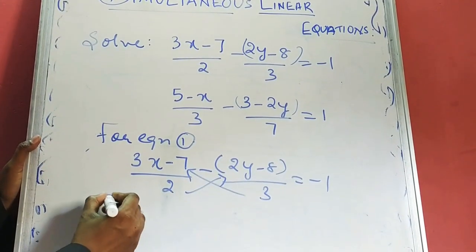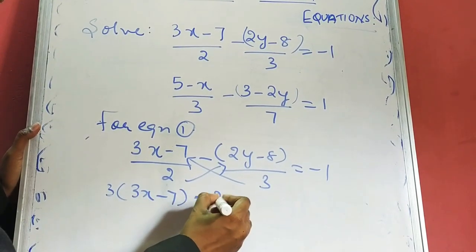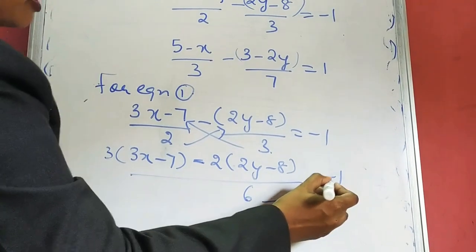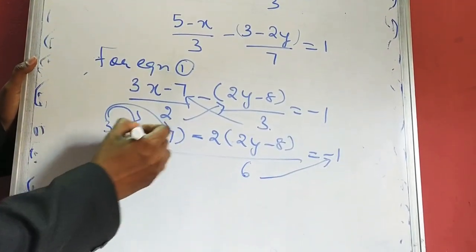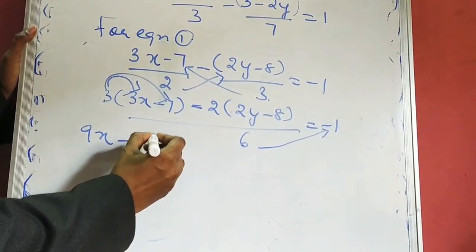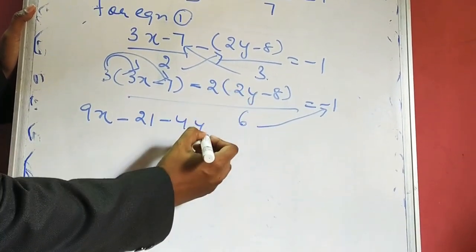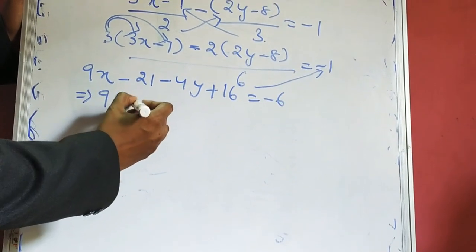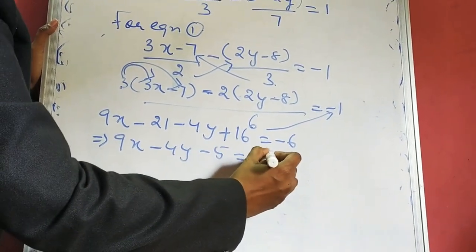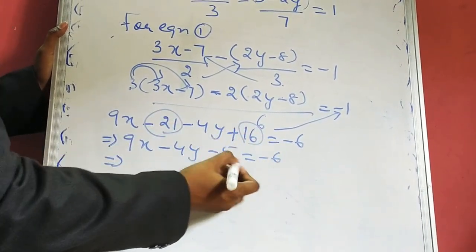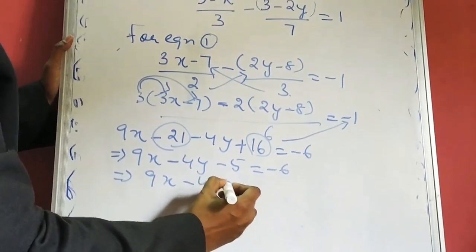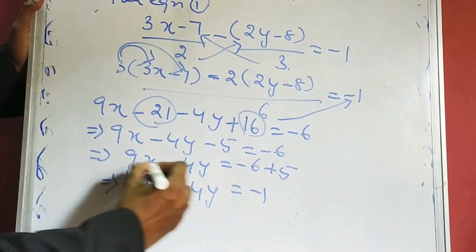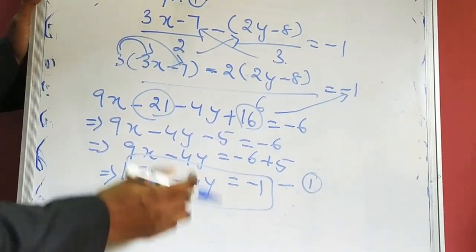For equation 1: (3x minus 7) by 2 minus (2y minus 8) by 3 equals minus 1. Cross multiplying with the LCM of 6: 3 times (3x minus 7) minus 2 times (2y minus 8) over 6 equals minus 1. Multiplying both sides by 6: 9x minus 21 minus 4y plus 16 equals minus 6. This gives 9x minus 4y minus 5 equals minus 6, so 9x minus 4y equals minus 1. This is the linear form of equation 1.